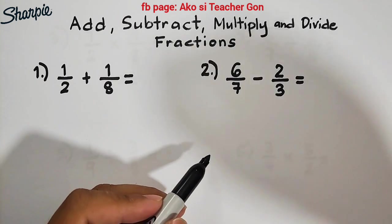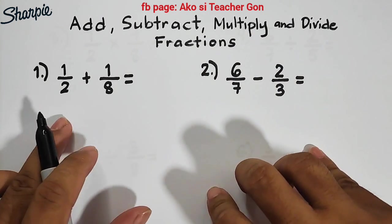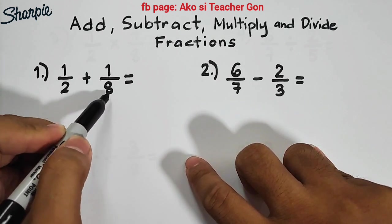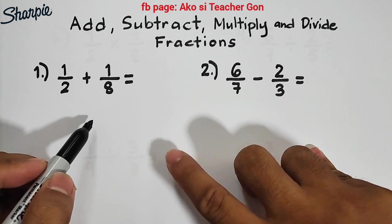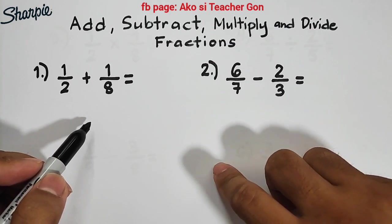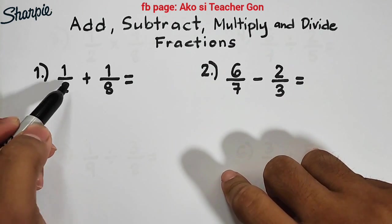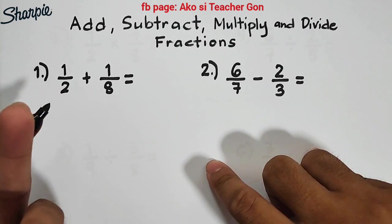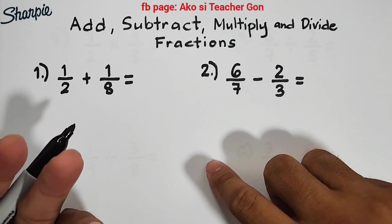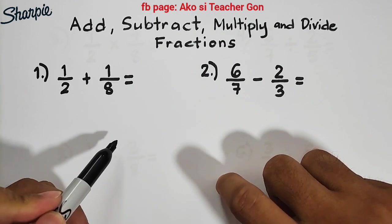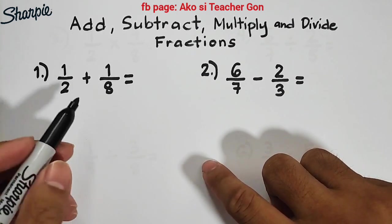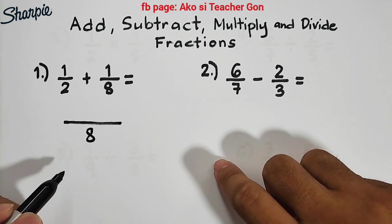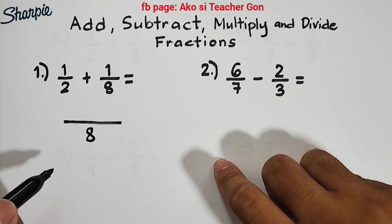Let's start with number one. We are asked what is 1/2 plus 1/8. This is addition, so what we need to do here first is to find the least common denominator. We have denominators which are 2 and 8 which are different, so we need to make the denominator common. Given 2 and 8, the least common denominator is 8.